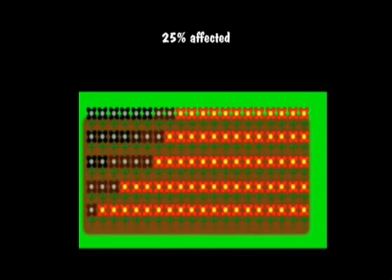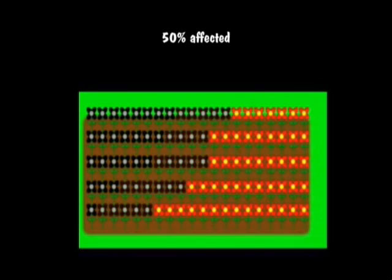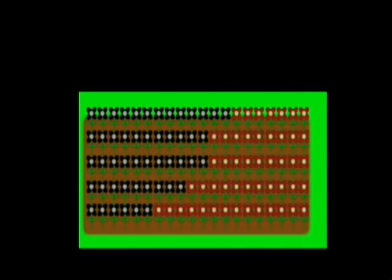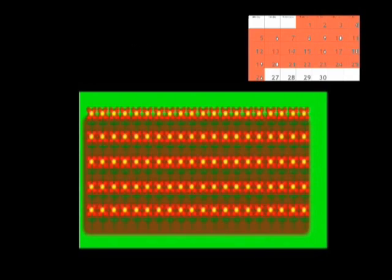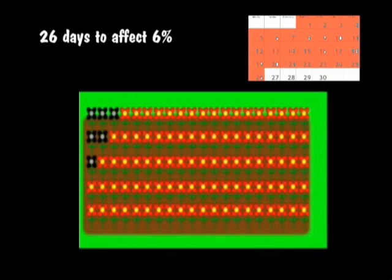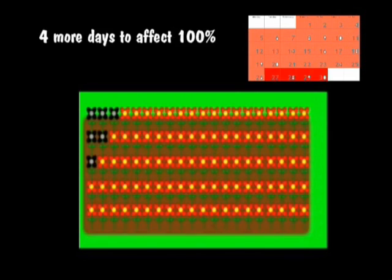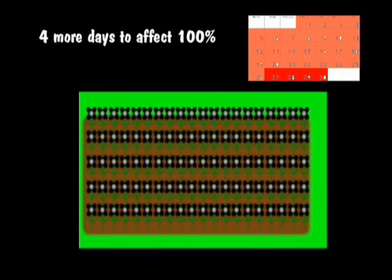The next day, your garden will be 25% destroyed, and you will only have 2 days to find a solution. And if you only get to see the problem one day after that, your garden will be 50% affected by the fungus, and that would be your final day when you could do something about it. Because the next day the fungus population will double in size again, and your entire garden will be lost. It took 26 days for the fungus to affect about 6% of your flower garden, and from that on, only 4 days to destroy it 100%.